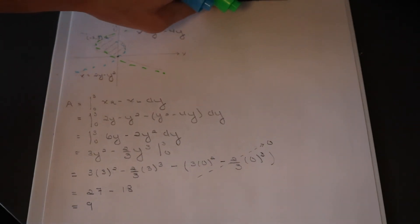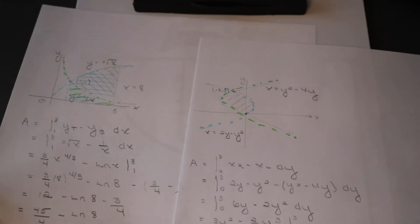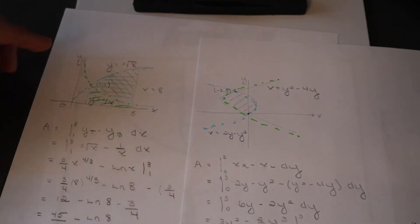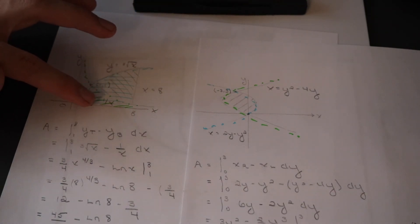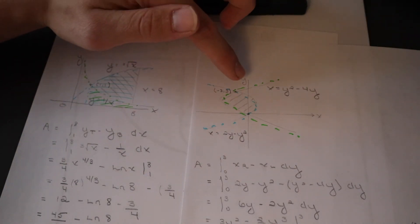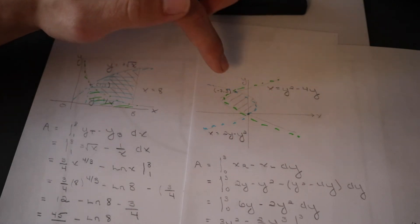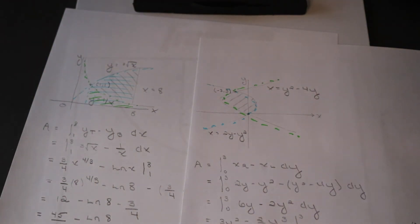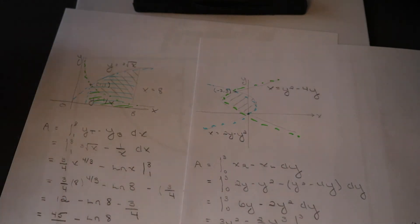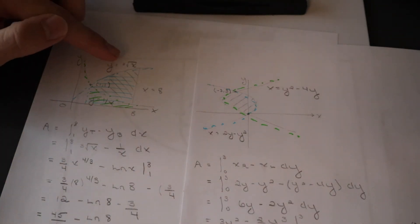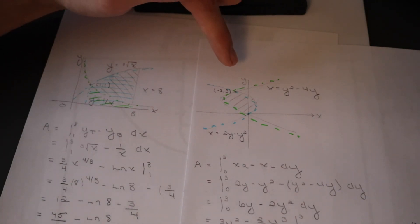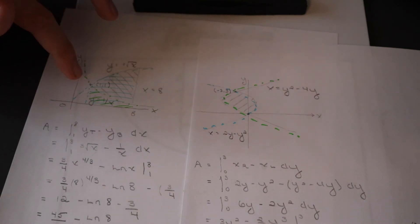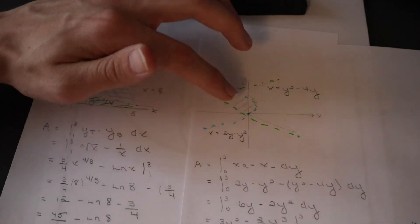Comparing the two examples side by side: in the first case, with functions in terms of x, we did top curve minus bottom curve. In the second case, with functions in terms of y, we did right curve minus left curve — and that gives us the area. Also, pay attention to bounds: if integrating in terms of x, your bounds must be x-values; if integrating in terms of y, your bounds must be y-values — in this case 1 to 8 versus 0 to 3.